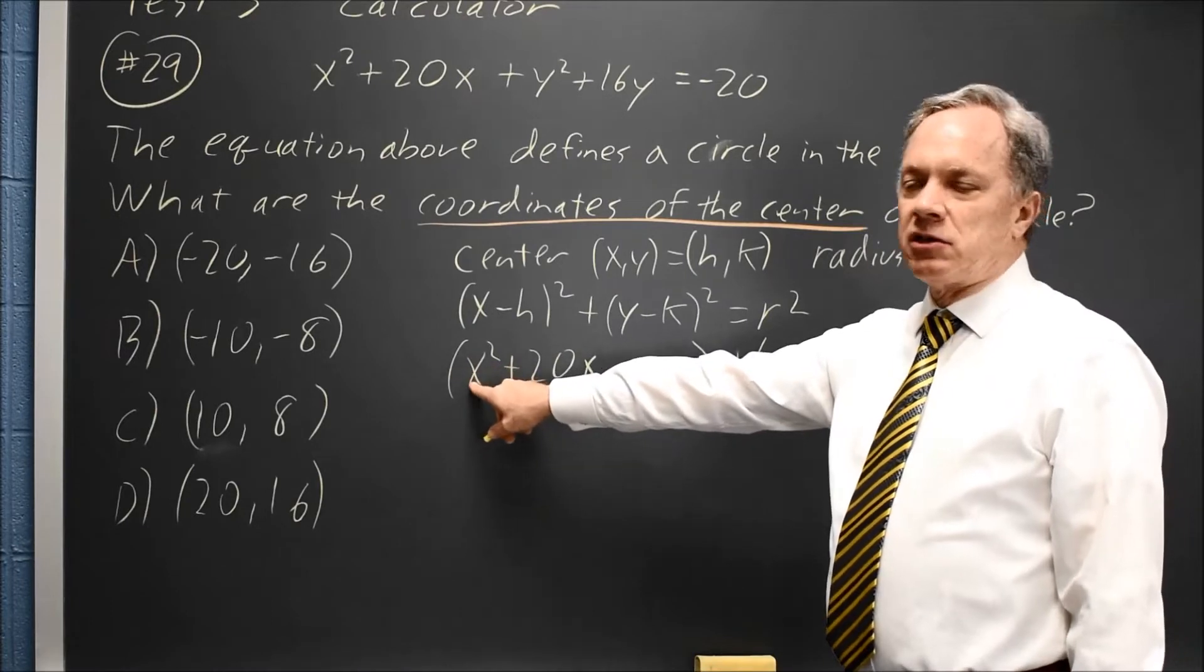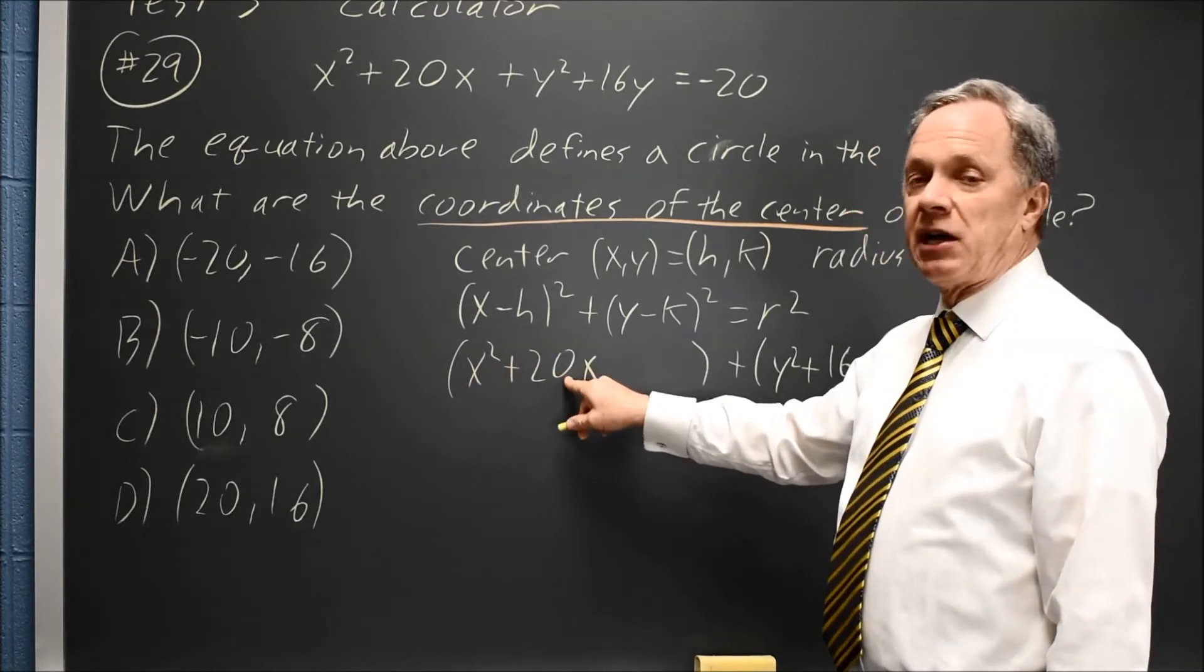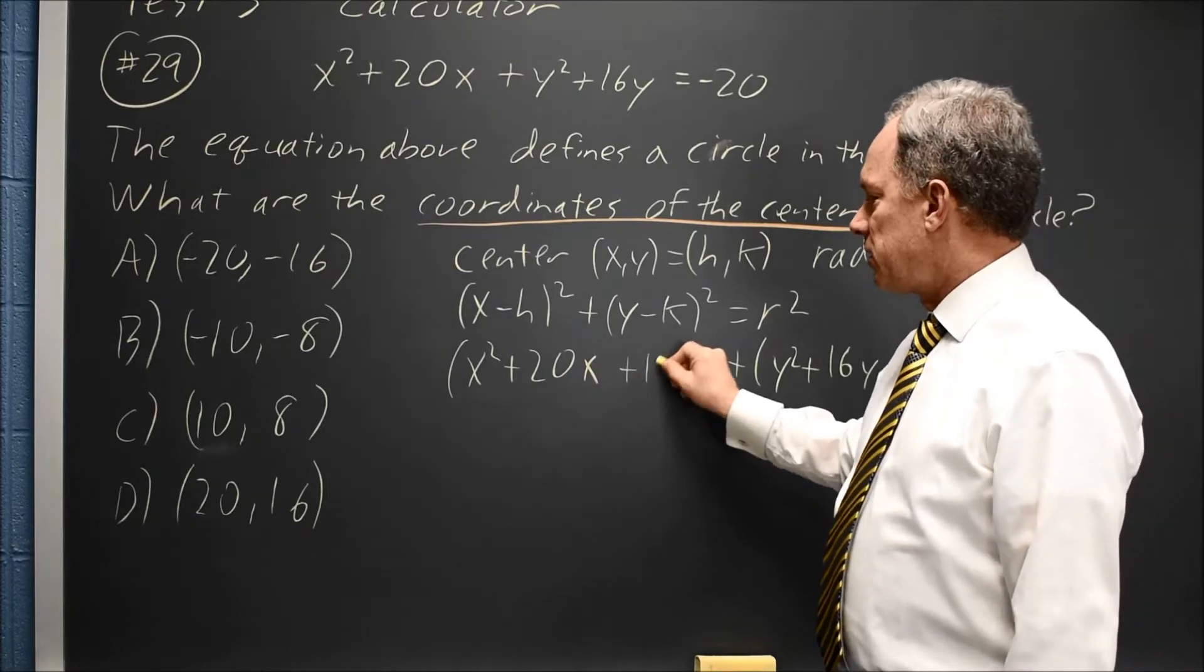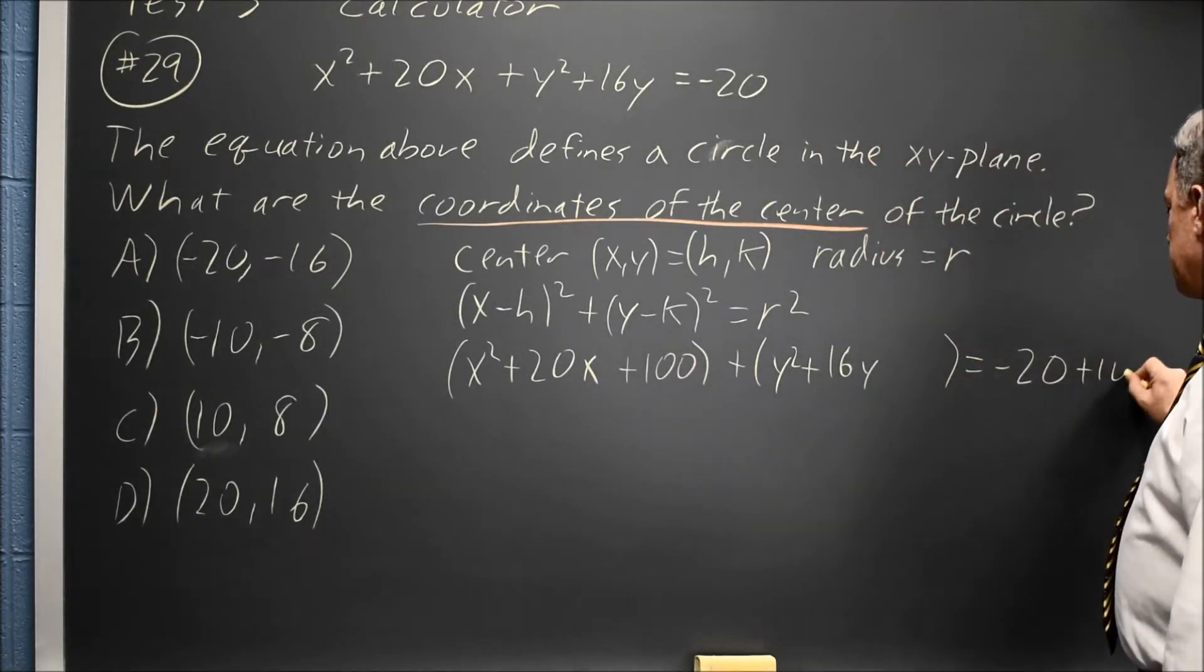Since the x² coefficient is 1, I can take half of the x coefficient. Half of 20 is 10, square that and I get 100, add 100 to the right-hand side.